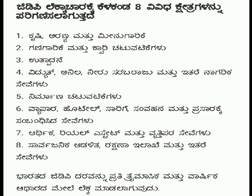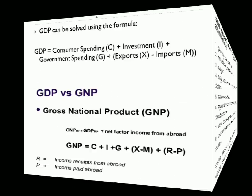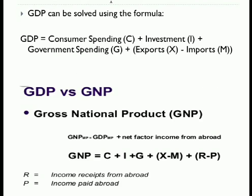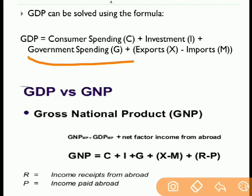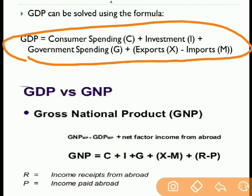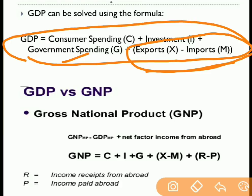So this is GDP — one of the key measures. GDP Expenditure components are: Consumption, Investment, Government, Export minus Import. This is the GDP formula. GDP stands for Gross Domestic Product; now let's move to Gross National Product.